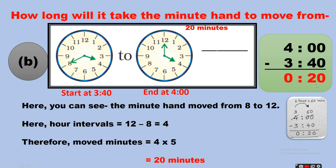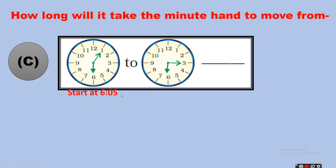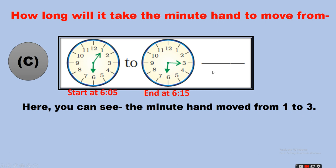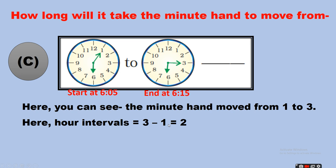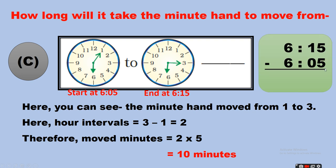Question C: starting time 6:05, ending time 6:15. The minute hand moved from 1 to 3. The number of intervals is 3 minus 1, which equals 2. Therefore, the minutes moved equals 2 multiplied by 5 — two fives are 10 minutes. In the other method: ending time 6:15 minus 6:05 equals 10 minutes. So the answer is 10 minutes.